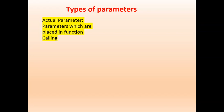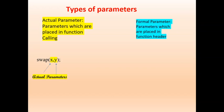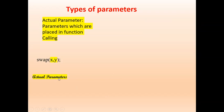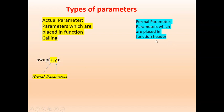First, consider actual parameters. The parameters which are placed in the function calling are known as actual parameters. For example, consider this swap function. In the swap function, x and y are actual parameters because they are placed inside the function calling.